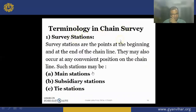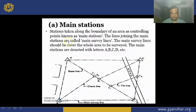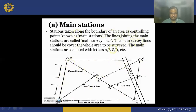Terminology used in chain surveying. Main stations are the stations taken around the boundary of the area. Here we can see stations A, B, C and D — these are called main stations or main survey stations. The lines joining the main stations are called main survey lines, such as lines AB, BC, CD, and AD.